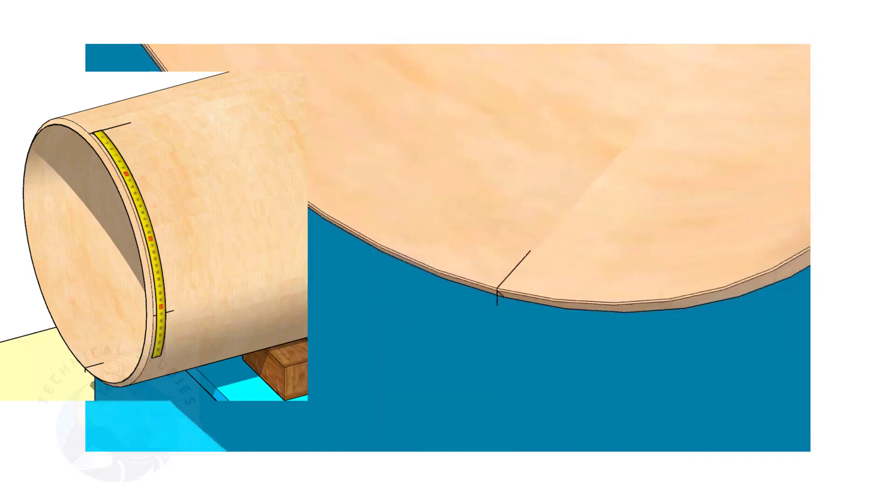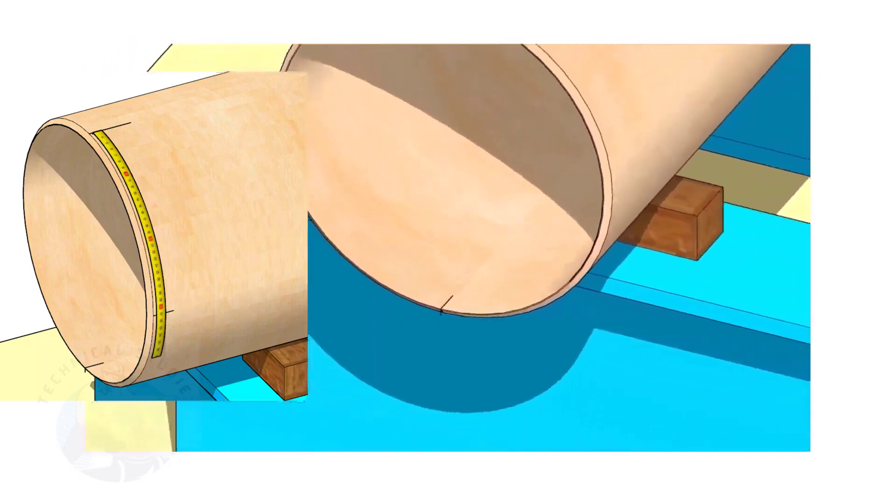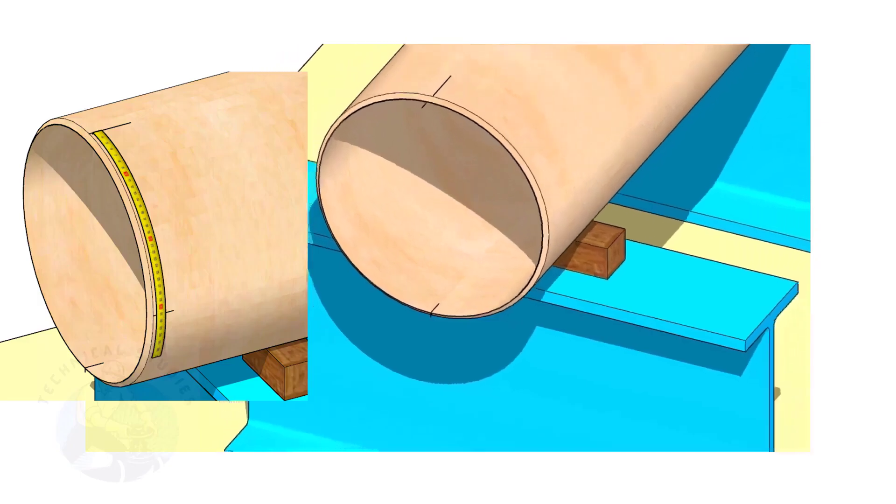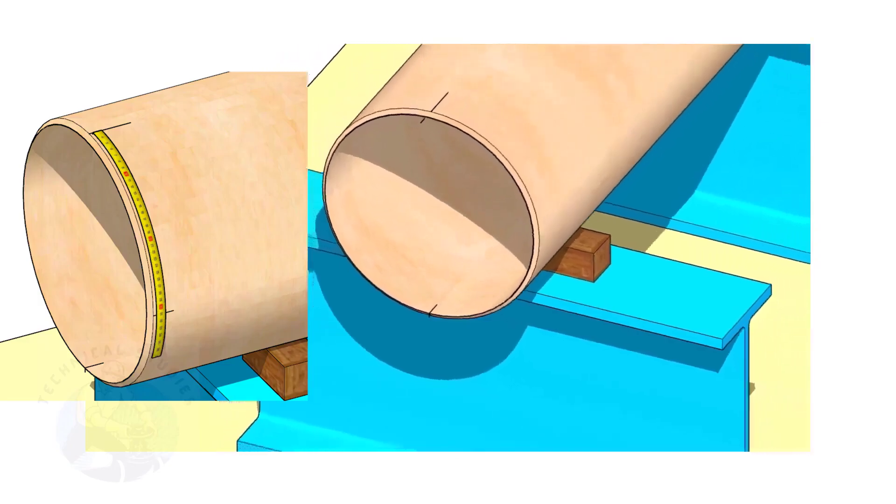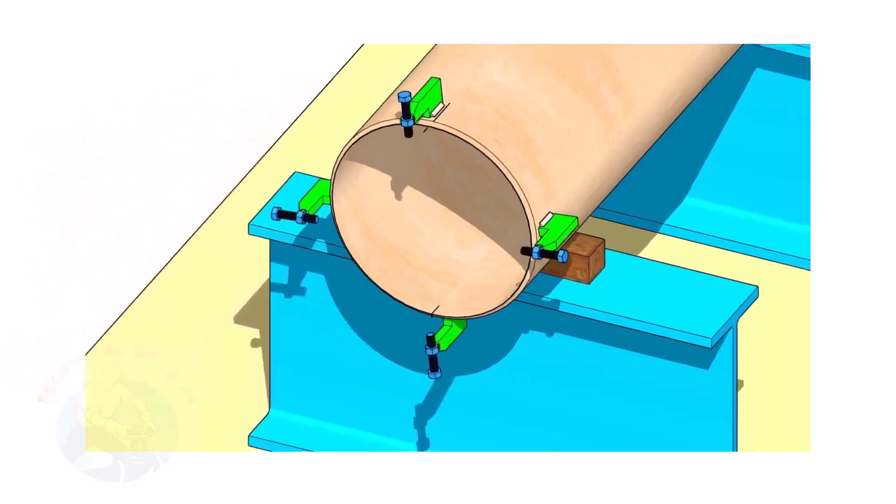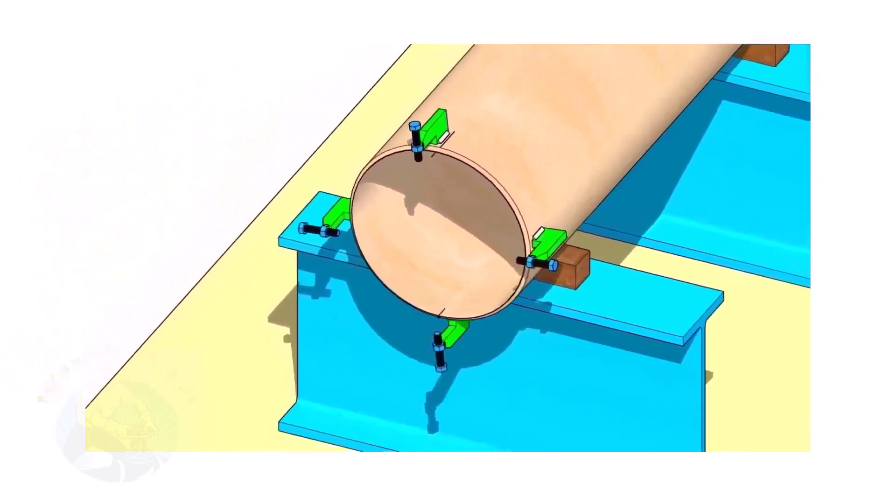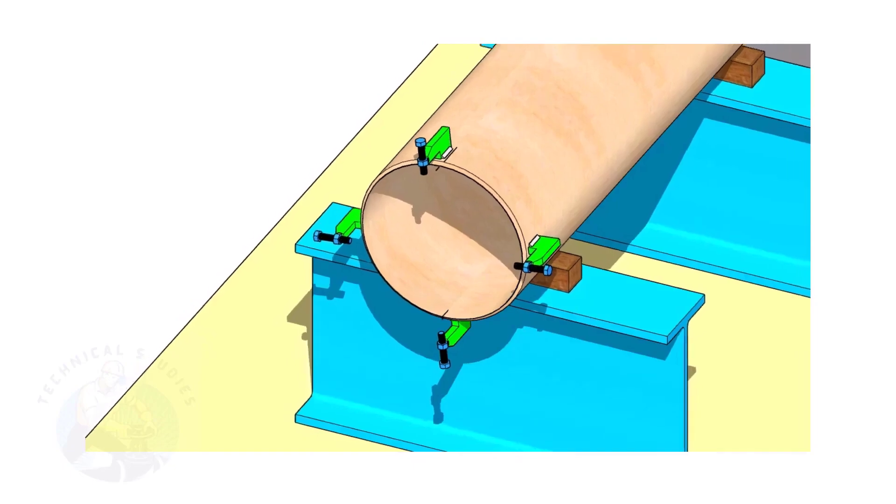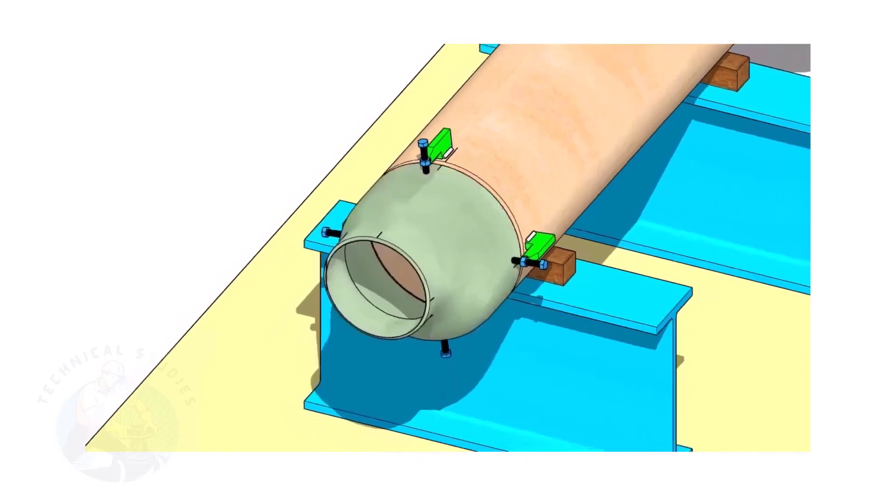Mark the quarter circumference on both sides of the pipe. If you don't have a pipe aligning clamp, tack weld four numbered jack bolts 90 degrees apart as shown.